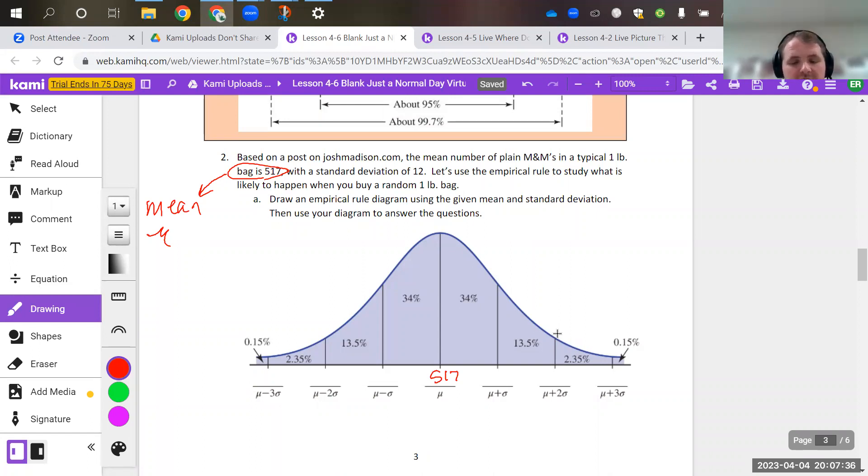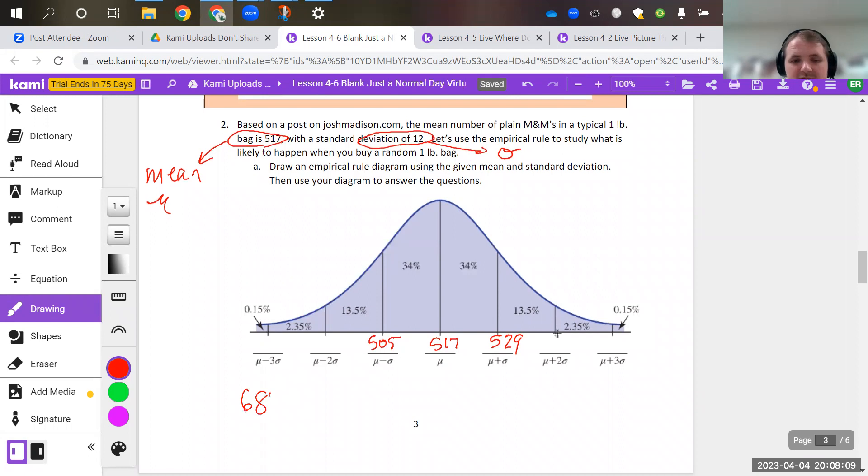So if we look at this, standard deviation. So we've got 12 right there. That is going to be denoted by a little circle called sigma. Okay, and that's standard deviation. So the mean, that little M thing, that sigma, the little O thing, stands for standard deviation. So if we add 12 onto 517, and we subtract 12 to get 505, that means that 68% of bags will have between 505 M&Ms and 529 M&Ms.